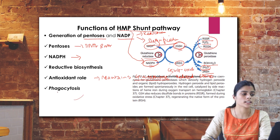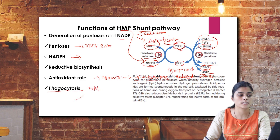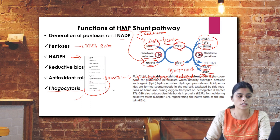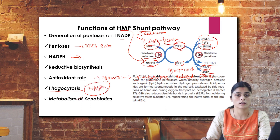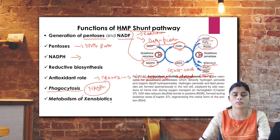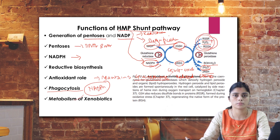Macrophages use NADPH for phagocytosis — to engulf bacteria or foreign material and render it non-toxic. Without NADPH, phagocytosis is not effective and cannot be undertaken by macrophages. Similarly, metabolism of xenobiotics for detoxification also occurs in the presence of NADPH.